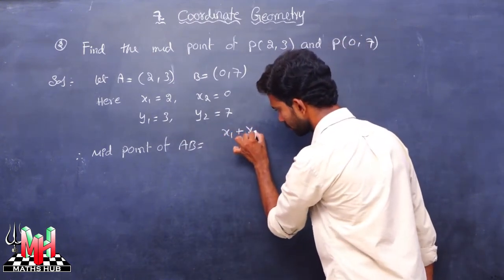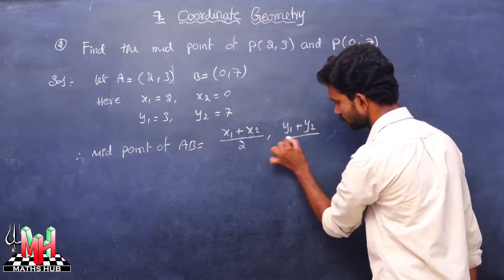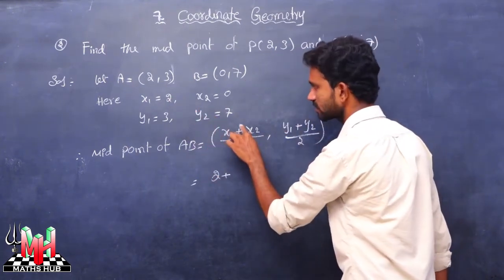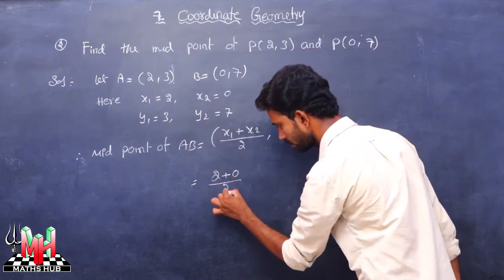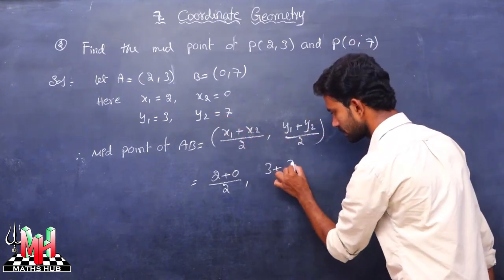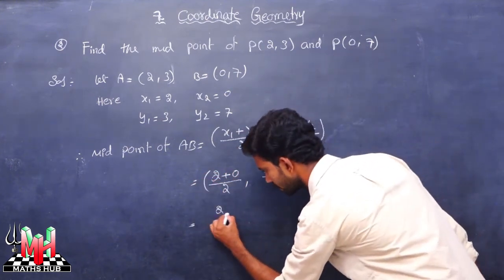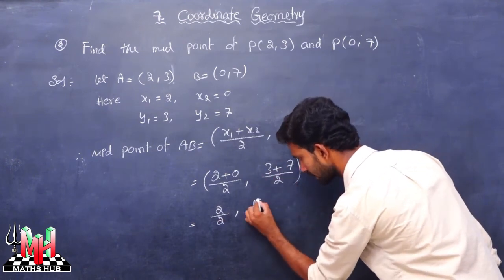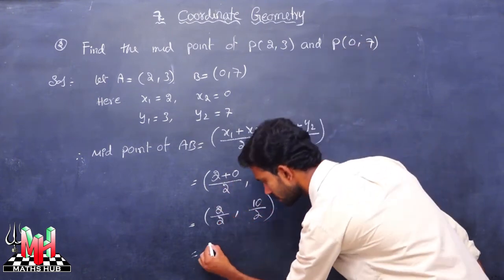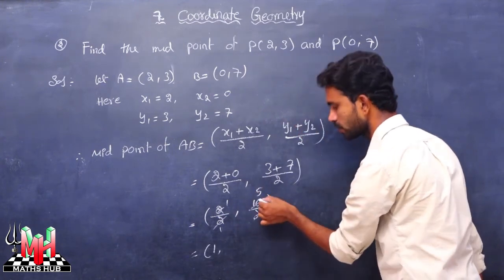The formula: x value, y value is equal to x1 plus x2 by 2 comma y1 plus y2 by 2. So, x1 plus x2 by 2 is 2 plus 0 divided by 2, and y1 plus y2 by 2 is 3 plus 7 divided by 2, giving 2 divided by 2 comma 10 divided by 2, which equals 1 comma 5.